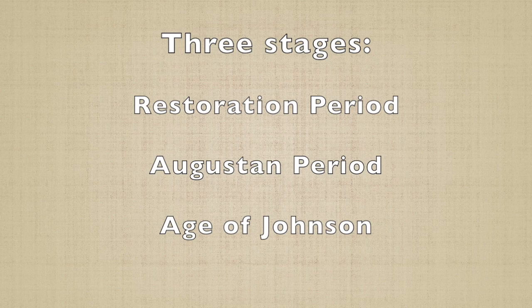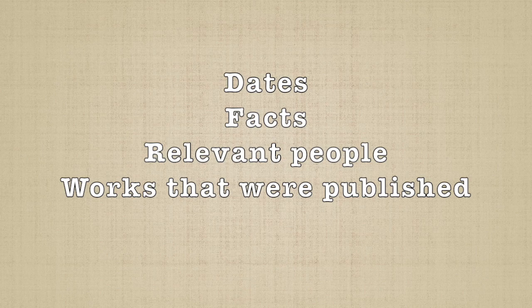This period is divided into three stages: the Restoration period, the Augustan period, and the Age of Johnson. In this video we're going to talk about each one of them — some dates, people that were important, facts, and works that were published.